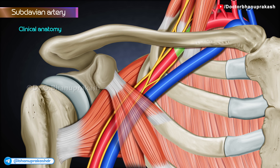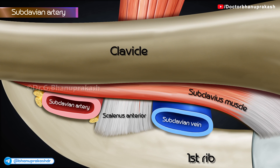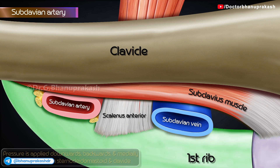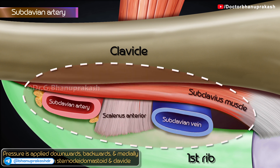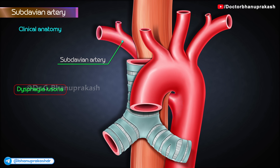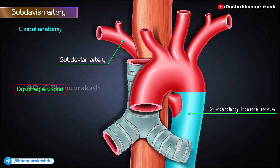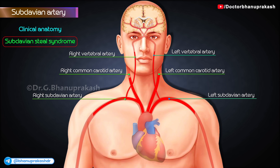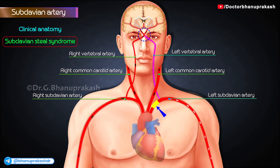Clinical anatomy. The third part of the subclavian artery can be effectively compressed against the first rib after depressing the shoulder. The pressure is applied downwards, backwards, and medially in the angle between the sternocleidomastoid and the clavicle. The right subclavian artery may arise from the descending thoracic aorta; in that case, it passes posterior to the esophagus, which may be compressed, and the condition is known as dysphagia lusoria. Subclavian steal syndrome: obstruction to the subclavian artery proximal to the origin of the vertebral artery may lead to stealing of blood from the brain through the opposite vertebral artery. This may provide necessary blood to the affected side, and the nervous symptoms acquired are called subclavian steal syndrome.